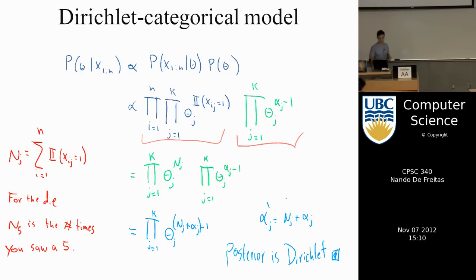And we learned that if we multiply Dirichlet distribution times a categorical distribution and normalize, we get a Dirichlet distribution. So Dirichlet prior, categorical likelihood, Dirichlet posterior.